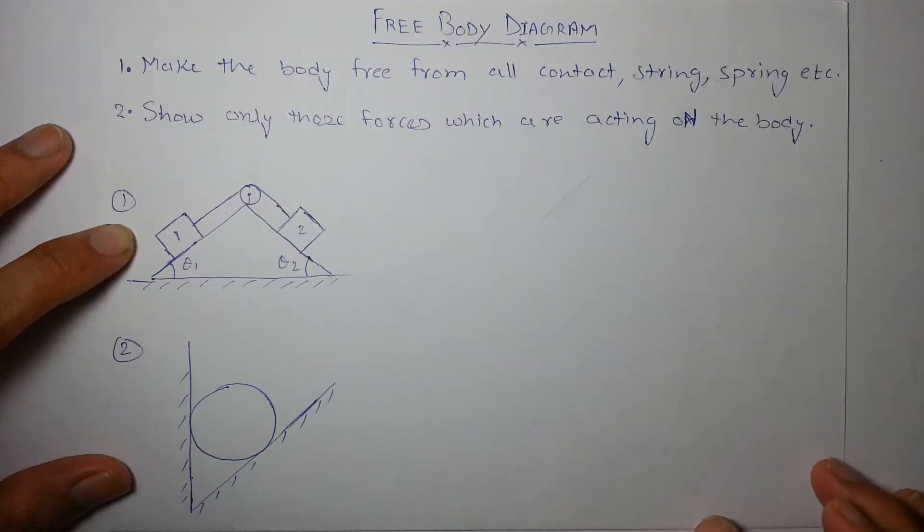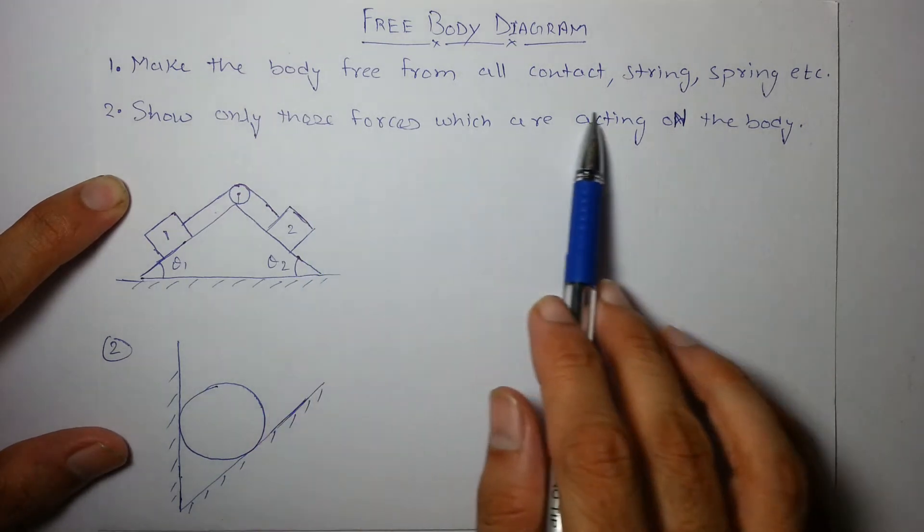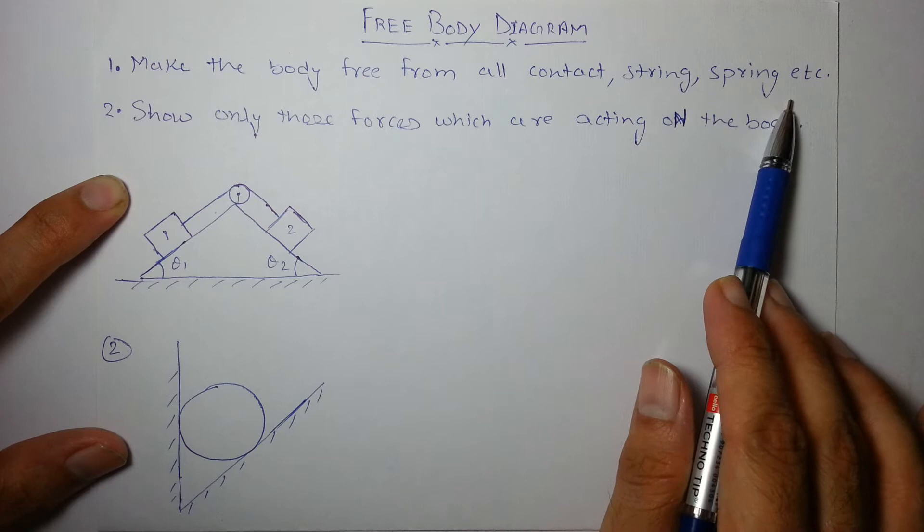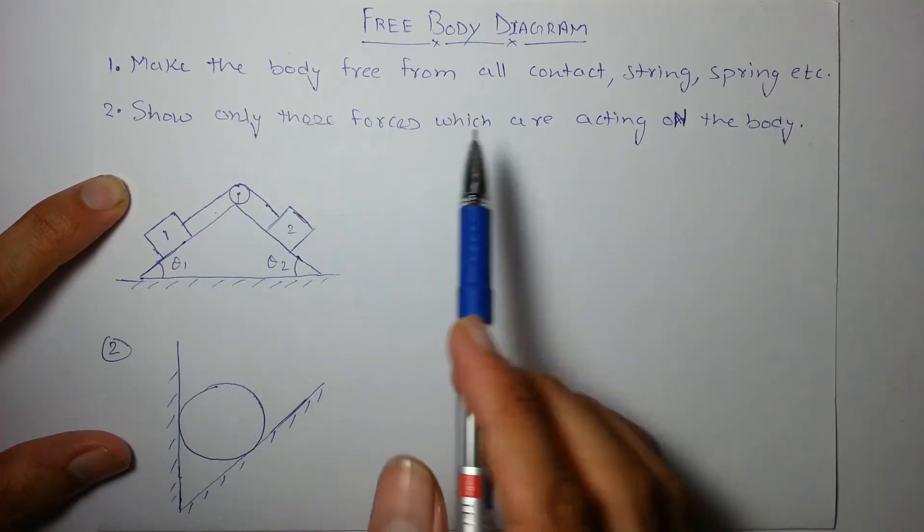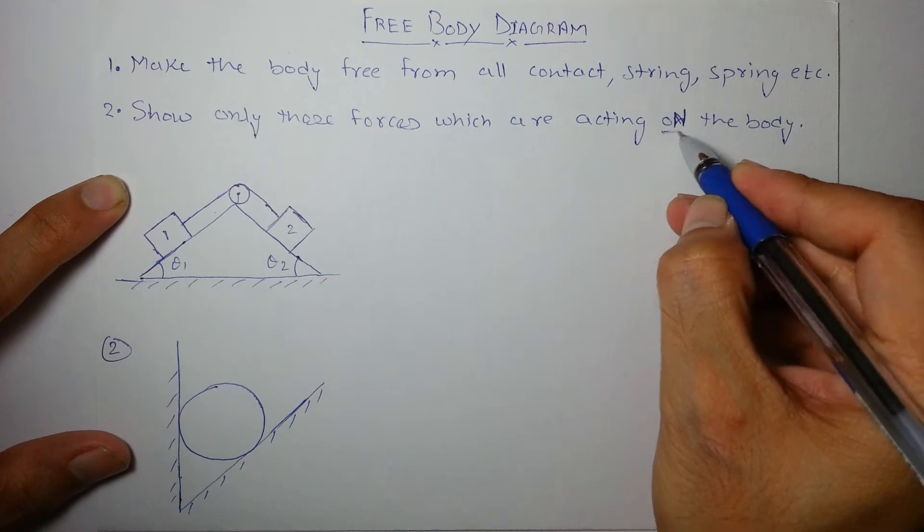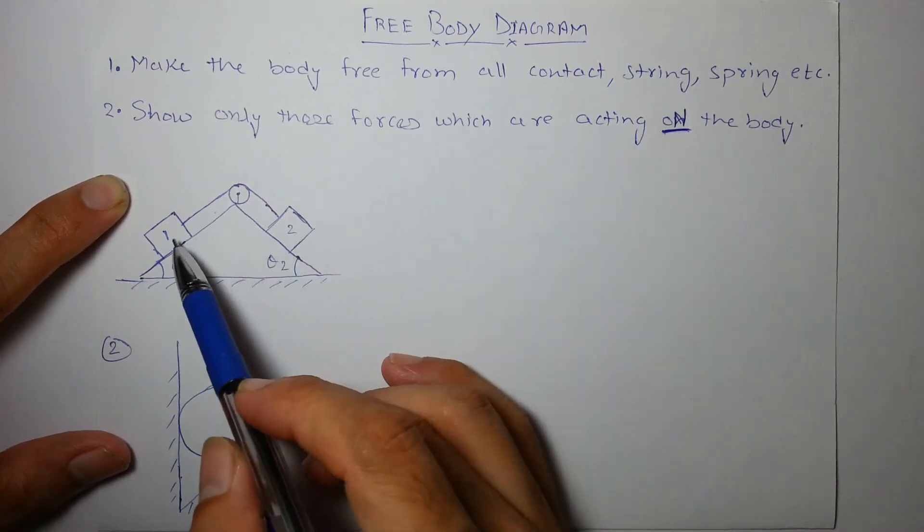Hi friends, in this video I will let you know how to draw free body diagrams. First of all, make the body free from all the contact, string, spring, etc., and show only those forces which are acting on the body. In free body diagram of object 1, we will show only those forces which are being acted on the body, not by the body.